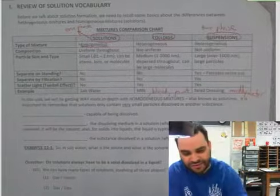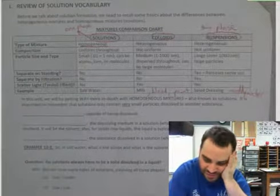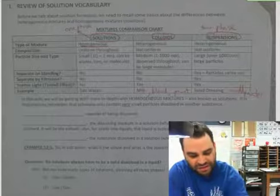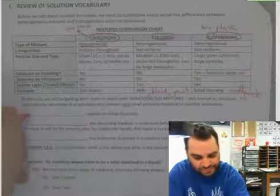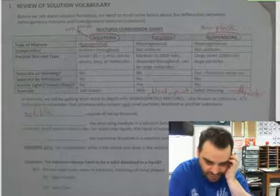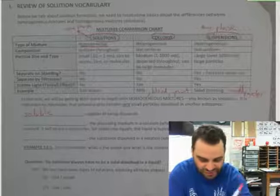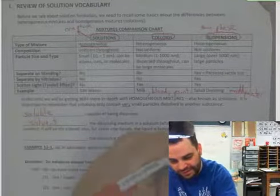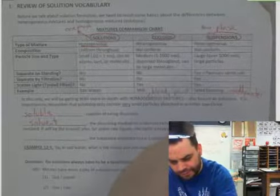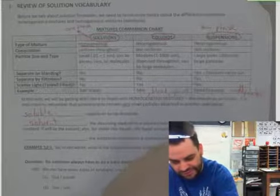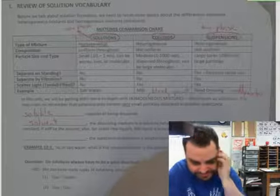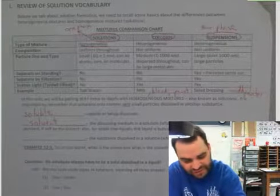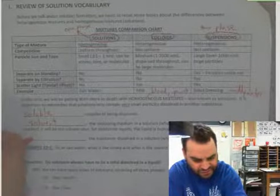This unit, we are focusing on the solutions, the homogeneous mixtures. It's very important that solutions are very small particles that are dissolved in another substance. Capable of being dissolved, this would be soluble. The dissolving medium in a solution, what's doing the dissolving? That would be the solvent. Remember, water is the universal polar solvent.